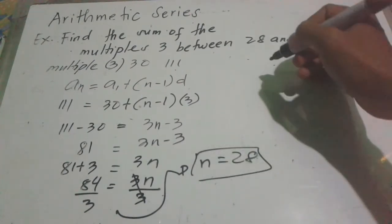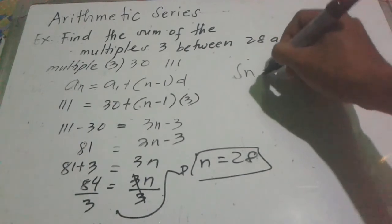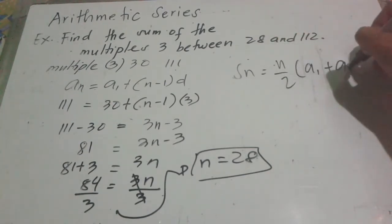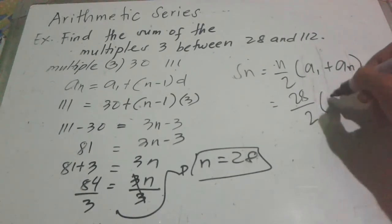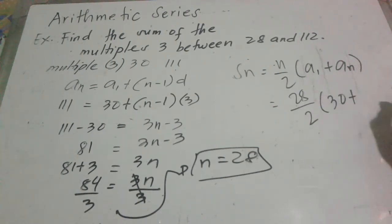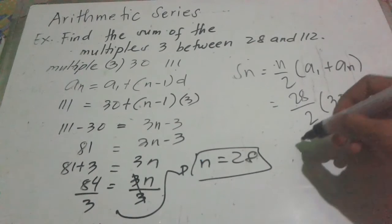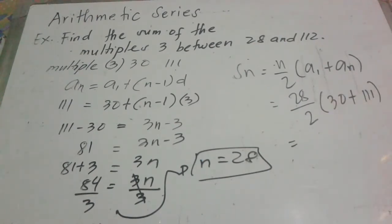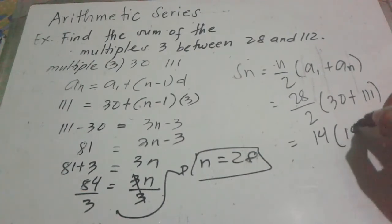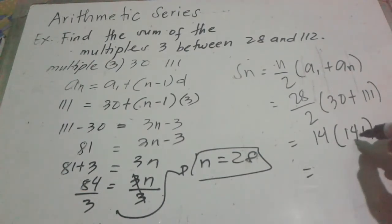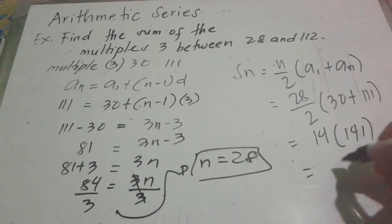Now we can use Formula 1: S sub n equals n over 2 times quantity A sub 1 plus A sub n. Substituting: n is 28, so 28 divided by 2, times quantity 30 plus 111. That gives 14 times 141, which equals 1,974.